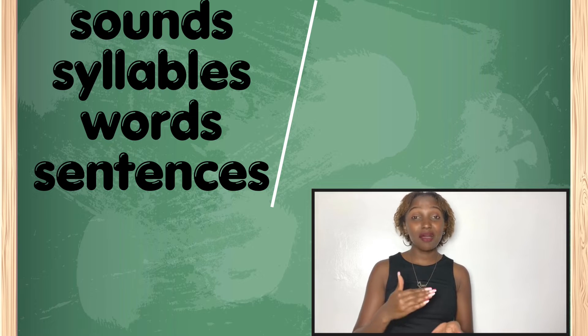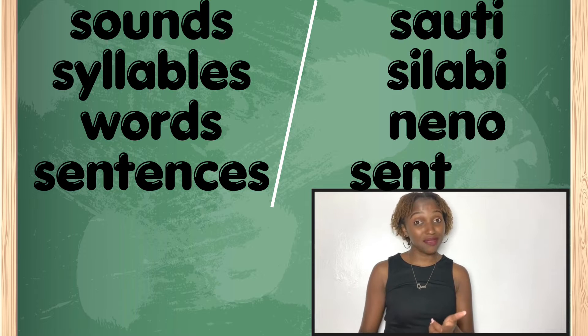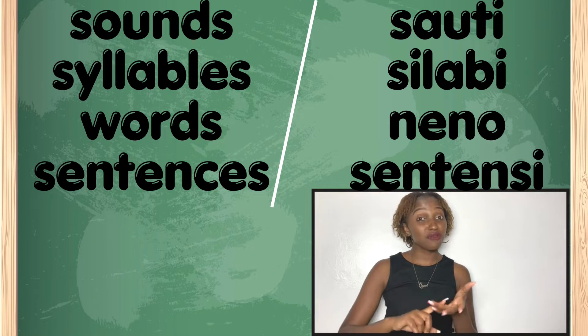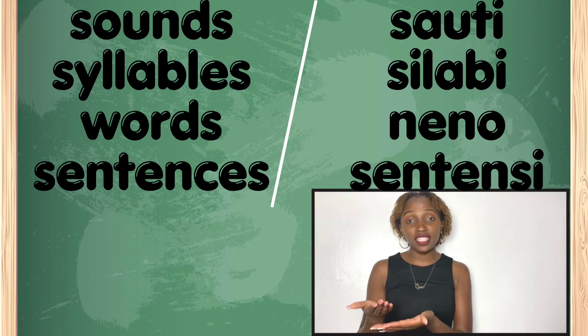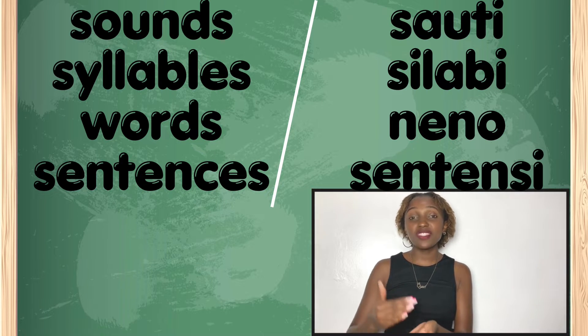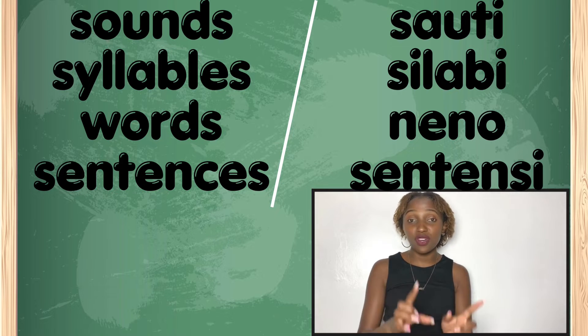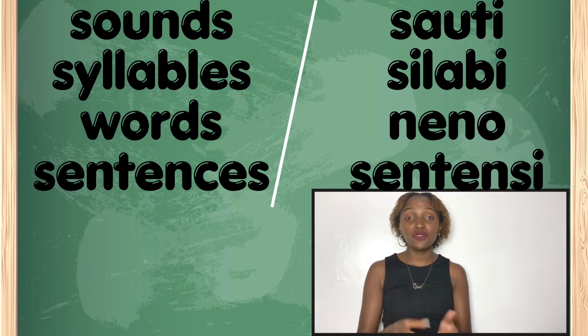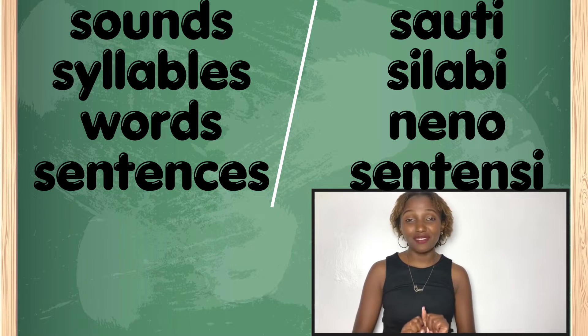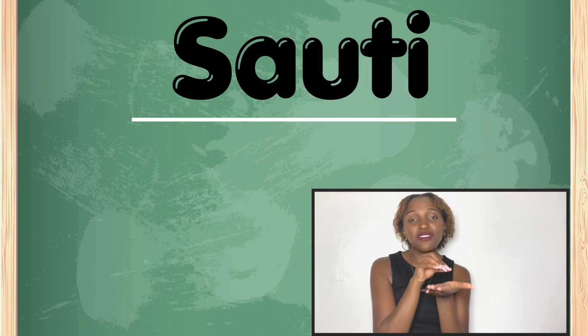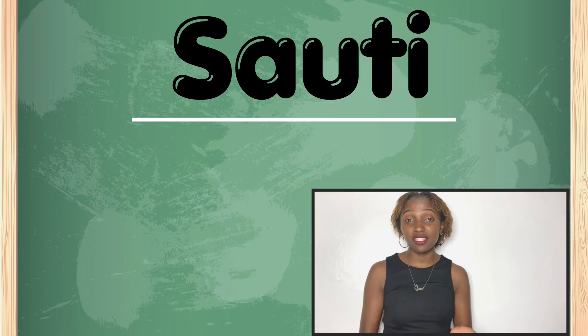The same thing happens in Kiswahili. So we use sauti, which is sound, to form syllables, then from syllabi, we use syllabi to form words, neno. And then we use the neno to form a sentence. The same way we use words to form sentences, we use neno kutengeneza sentence. But for today, we will learn about sauti, which is the smallest part. Sauti za kiswahili ni kama sauti za kingereza.